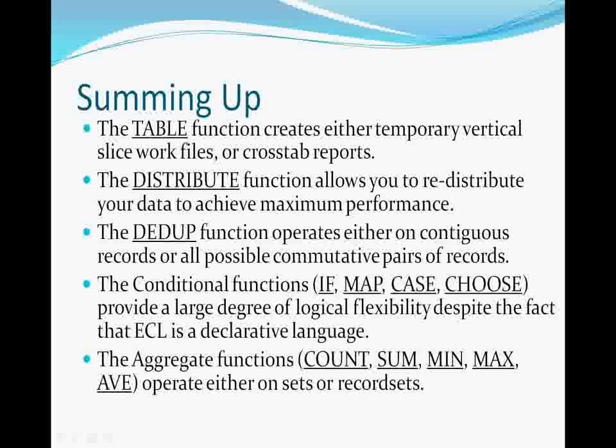Let's briefly restate the things we've just gone over. One, the TABLE function creates a temporary dataset in memory, either as a vertical slice or a crosstab report. Two, the DISTRIBUTE function redistributes the dataset in memory so that all records with the same value for DISTRIBUTE's second parameter expression — usually one of our hashing functions — all end up on the same node together. Three, DEDUPE removes duplicate records, similar to DISTINCT in SQL. Four, when you have a choice of conditional functions to use, CHOOSE is the most efficient, CASE is the next most, and IF and MAP give you all the flexibility you need. Five, COUNT, SUM, MIN, MAX, and AVERAGE all will operate either on record sets — their more common use — or sets of values. Replacing the record set parameter for any of these functions with the keyword GROUP, when used in a record structure for a TABLE function, creates a crosstab report.